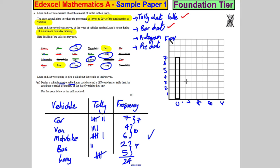And then we just can draw the bars in. So for a car we'd go up seven. For a van we'd go up four. For a motorbike we'd go up six. For a bus we'd go up two. And for a lorry we'd go up five. And that's probably the easiest chart you can do.